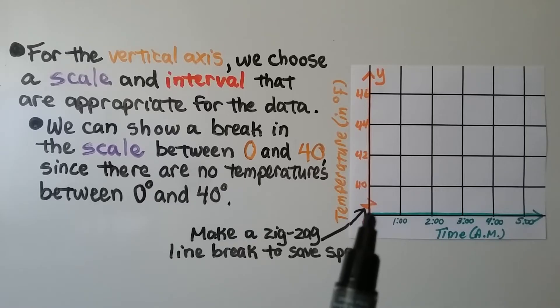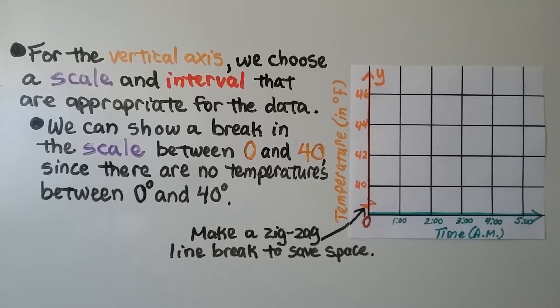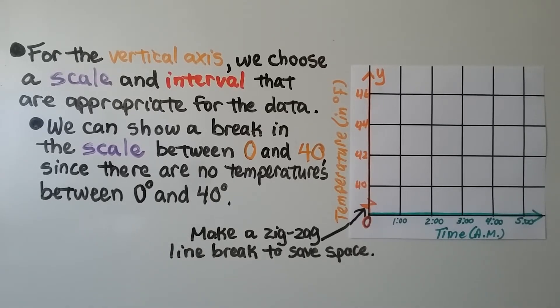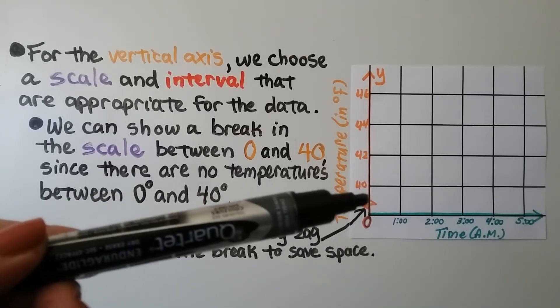We make a zigzag. See how it comes out, comes in, and then comes back to the orange line going up? That zigzag line break is to save space. Otherwise, we'd have 10, 20, and 30 here, and there's no information for 10, 20, 30, so we can just save space and put this zigzag line break.